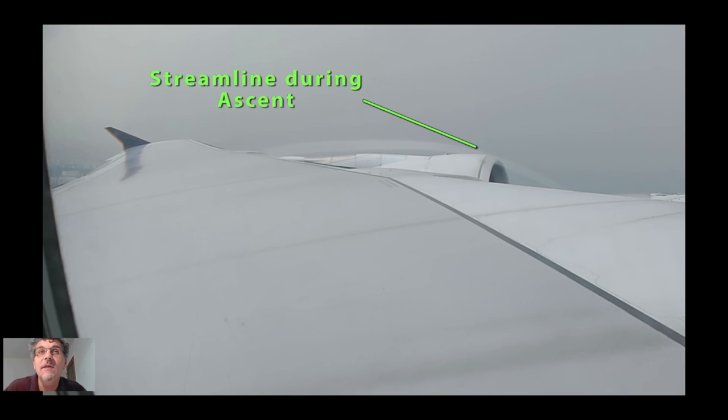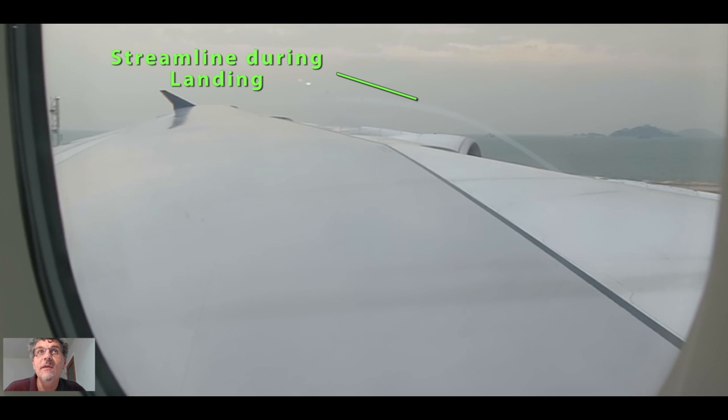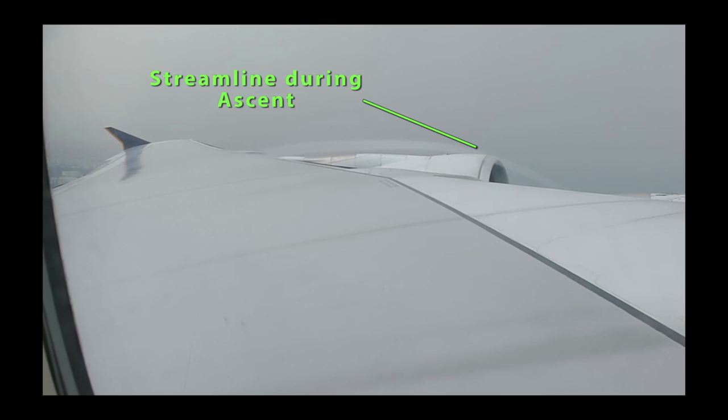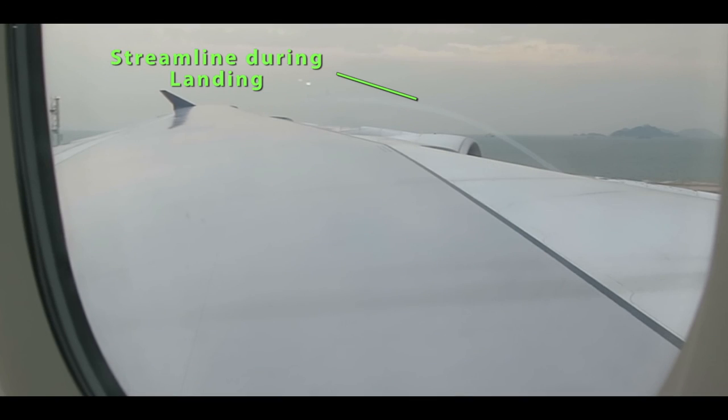Here you can see the streamline during ascent coming over the wing. And there you can see the streamline during landing. They're very different if you go back and look at the video and compare those two. It makes sense, when you're ascending or climbing out away from the airport, the flaps and everything are very different configuration from when you're landing. Consequently, you would expect the streamlines between those two to be different.